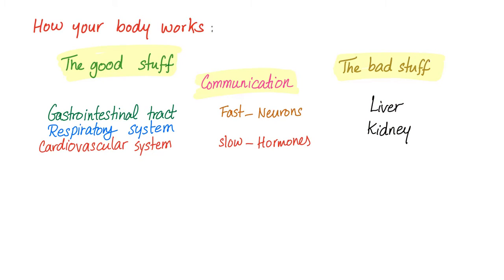So how does your body work? You have the good stuff such as nutrients, the bad stuff like waste products and carbon dioxide, and you need communication systems.